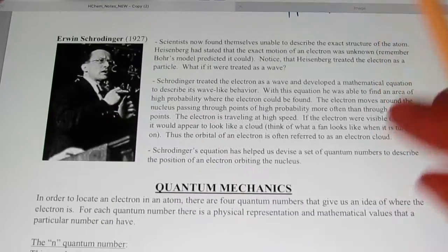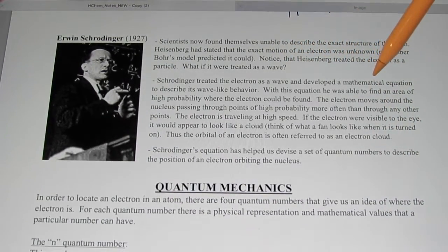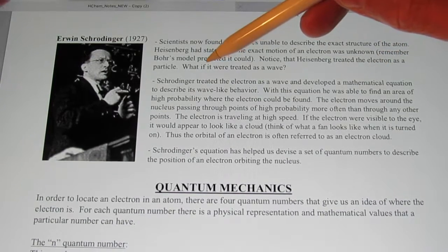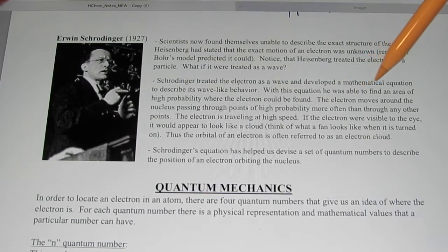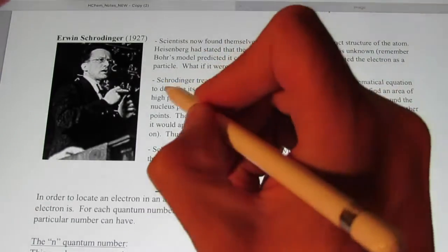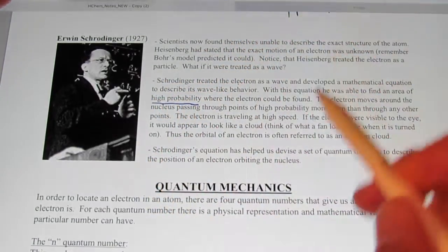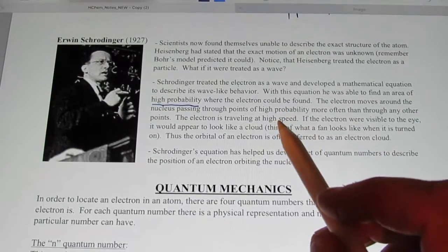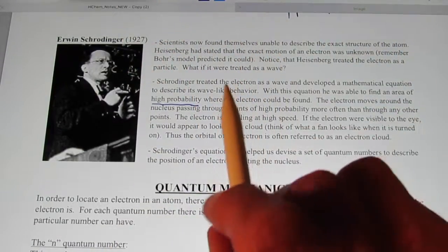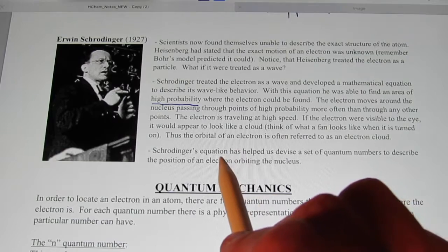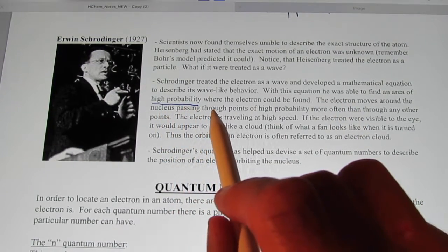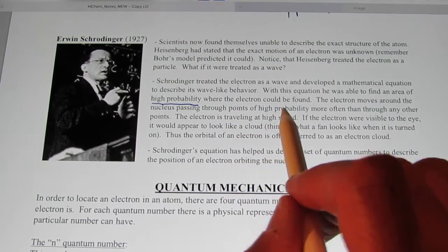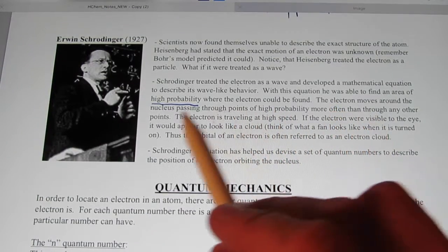Schrödinger treated the electron as a wave and developed a mathematical equation to describe its wave-like behavior. With this equation, he was able to find an area of high probability where an electron could be found. Not exactly where it could be found, but what we call an area of high probability. The electron moves around the nucleus, passing through these points of high probability more often than through other points.